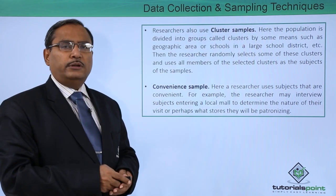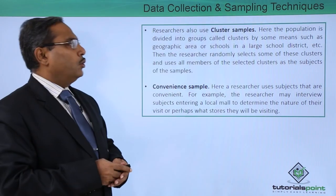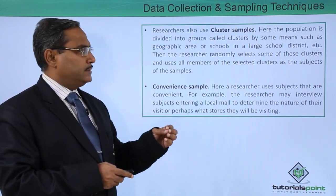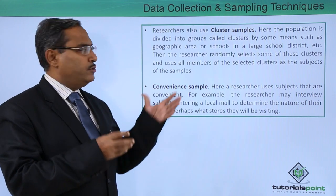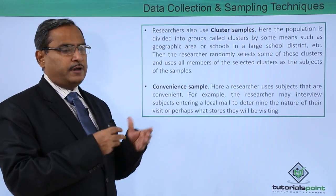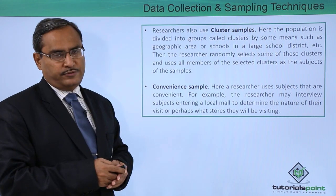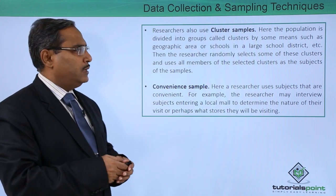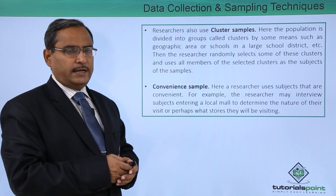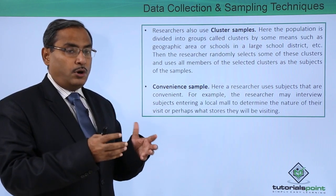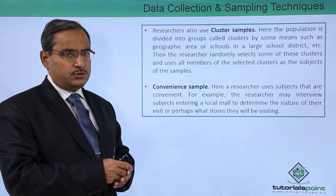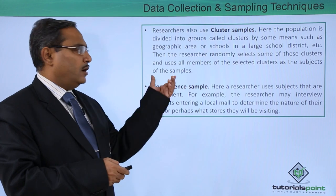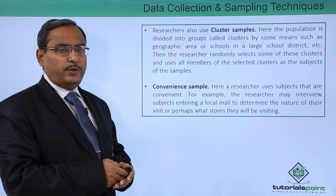Next, we go for cluster samples. Here the population is divided into groups, also known as clusters, by some means such as geographic location or other properties — for example, schools in a large school district. Using some property, the population is divided into multiple clusters and the researcher randomly selects some clusters, then uses all the subjects belonging to those selected clusters as the sample.